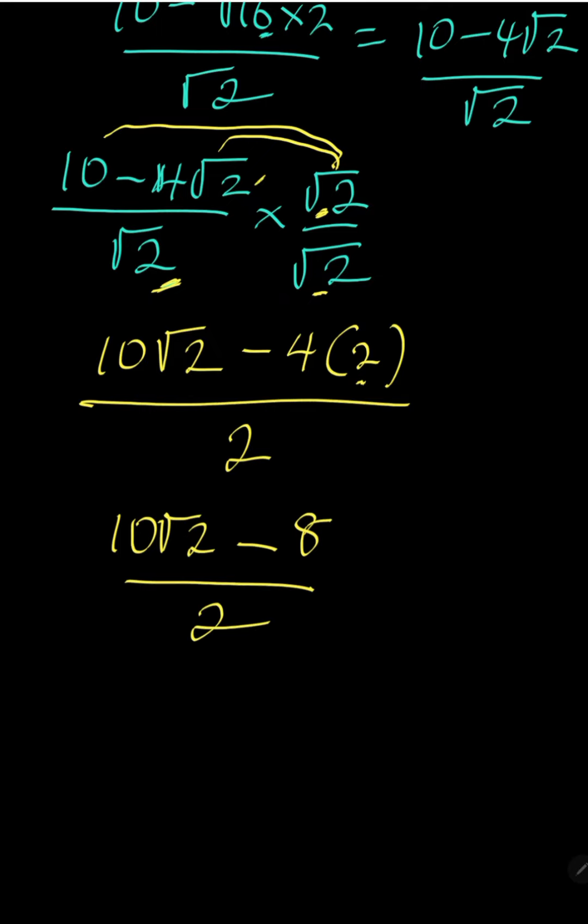Notice that 2 can divide all the terms in the numerator. So, 2 divided itself has gone. 2 divided by 10 is 5. Divide minus 8 is minus 4. So, we are having 5√2 minus 4. This is the solution to this problem. Do not forget that this video is proudly powered by your lesson app.